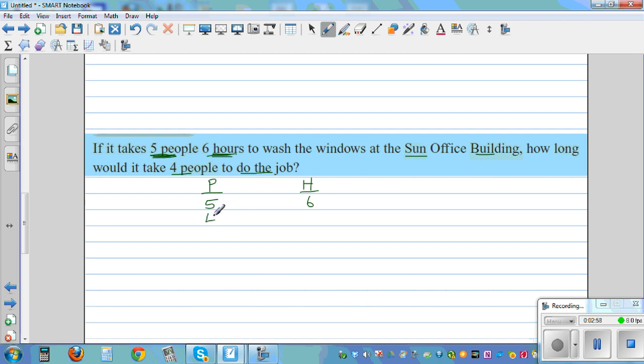5 people takes 6 hours to wash the window. So if you got 4 people, how many hours would you need? Obviously if this is decreasing, if the number of people is decreasing, this should increase in a reverse order. And this is called inverse proportion.